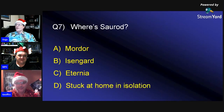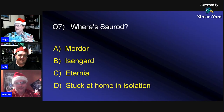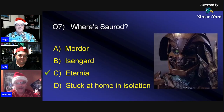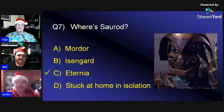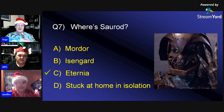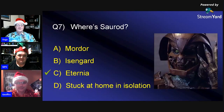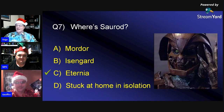Answer seven: Sour Rod is on Eternia. He's one of the 'curious quartet' of mercenaries in Masters of the Universe. The host put this question in because 'Sour Rod' sounds like 'Sauron' from Lord of the Rings — and poor Sour Rod gets de-rezzed pretty quickly.